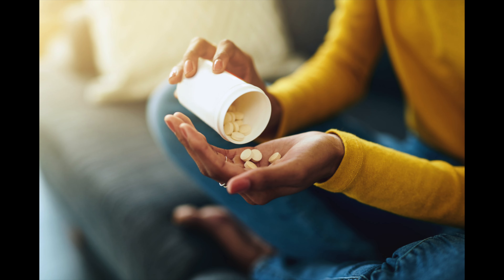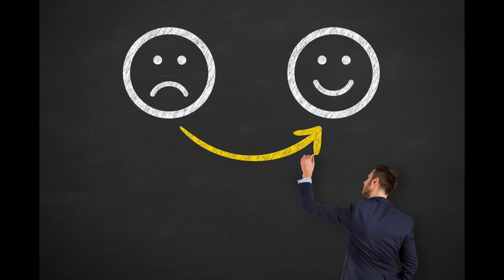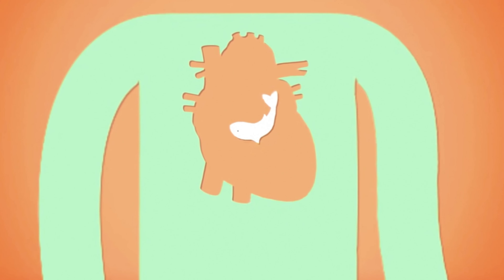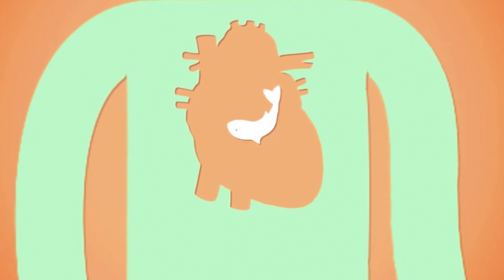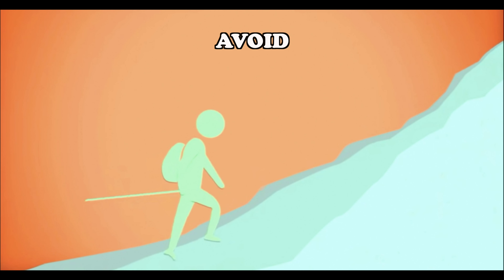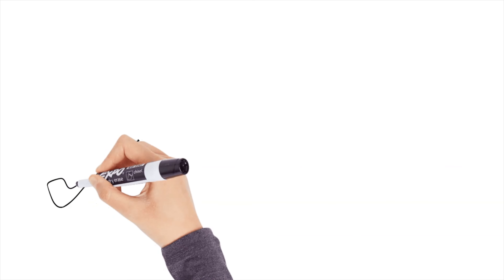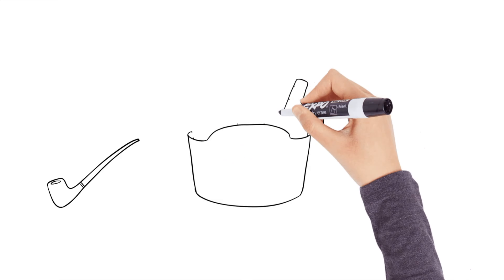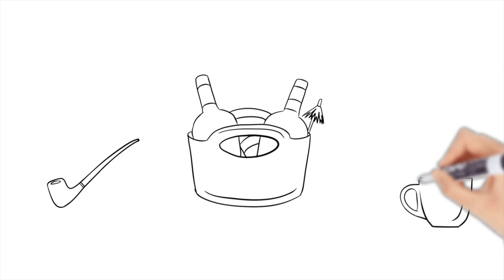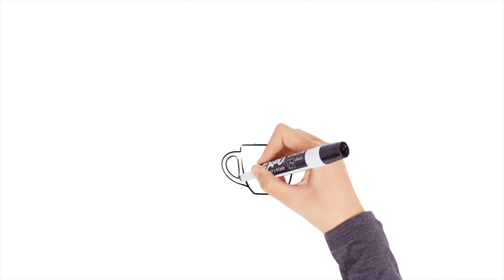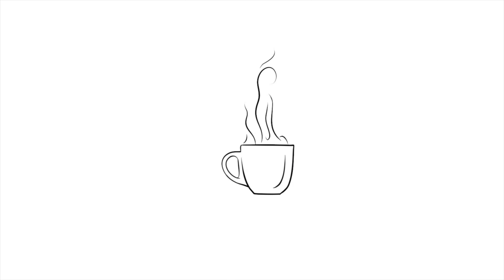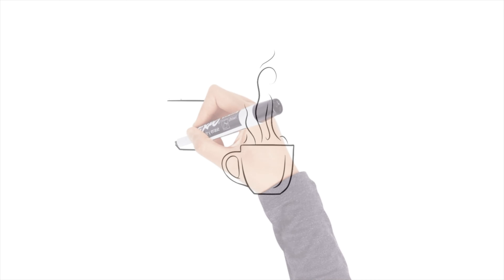In addition to taking medications, there are lifestyle changes you can make to improve your heart health. If your irregular heart rhythm occurs more often with certain activities, avoid those activities and tell your doctor. Remember, sometimes your medications may need to be adjusted. Quit smoking and limit your intake of alcohol. Limit the use of caffeine — some people are sensitive to caffeine and may notice more symptoms when using caffeinated products such as tea, coffee, and energy drinks.